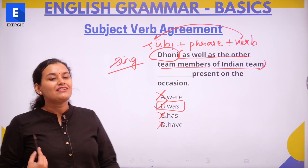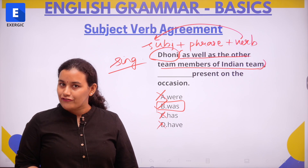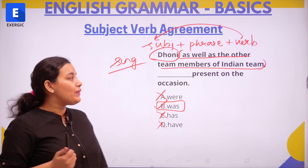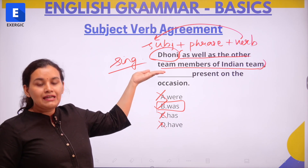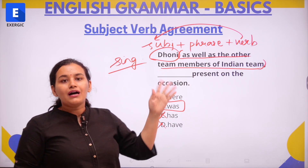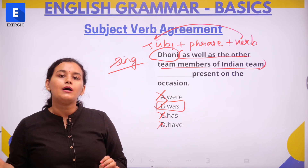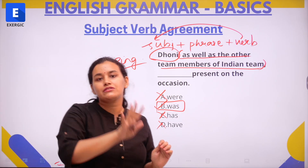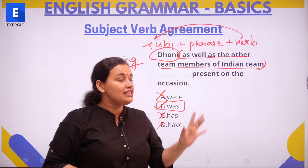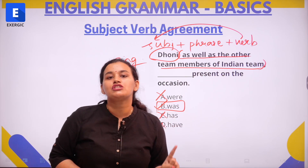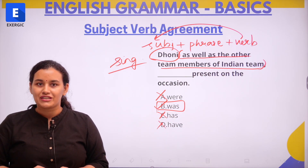So the final sentence will be: Dhoni as well as the other team members of the Indian team was present on the occasion. It seems a little wrong to say out loud, but that is the correct format. Whenever you have the main subject, comma, a phrase, comma, the verb — the verb always takes the form of the main subject. This phrase does not change the number of the subject.